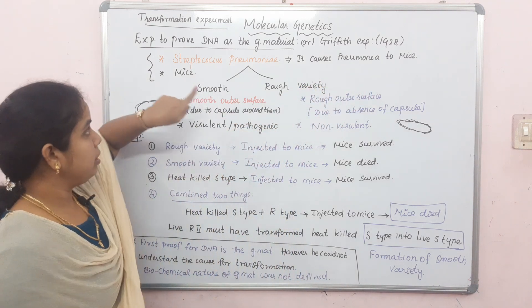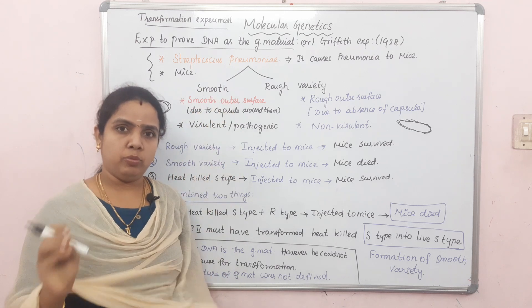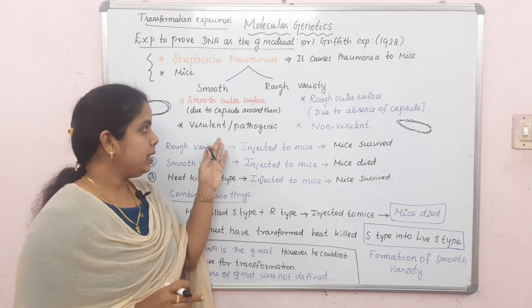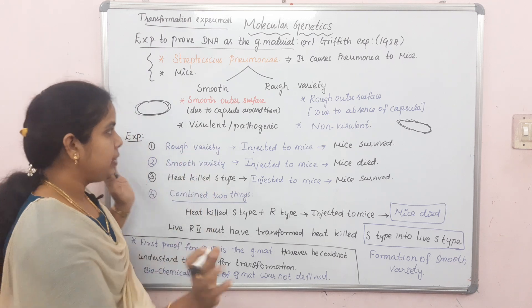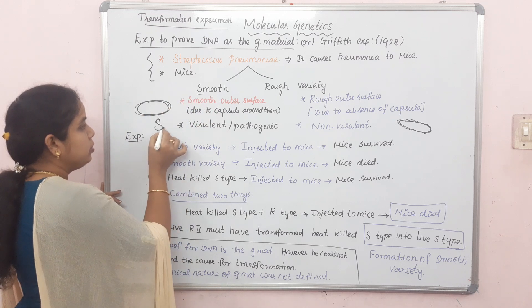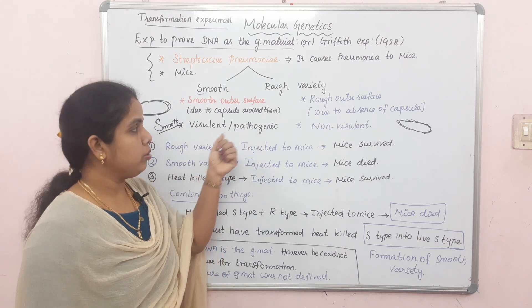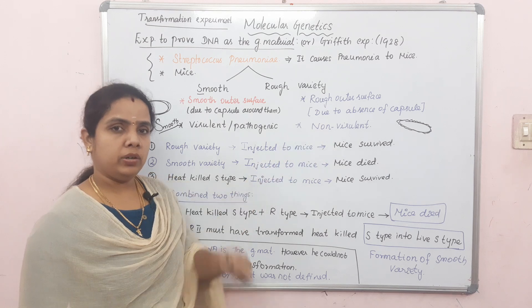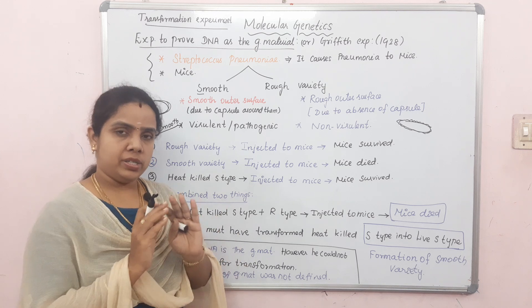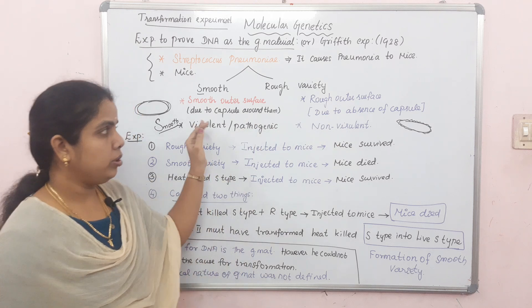So, smooth variety causes pneumonia in mice — it is pathogenic. Rough variety does not cause any disease — it is non-pathogenic. These are the two varieties of Streptococcus pneumoniae used in Griffith's experiment.